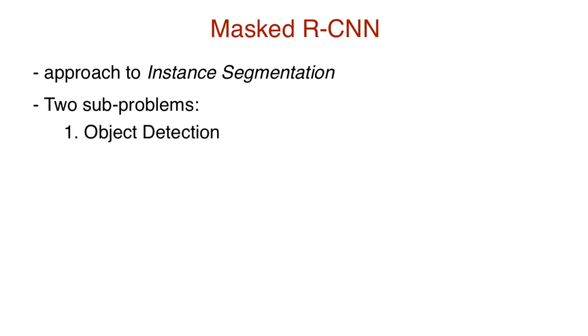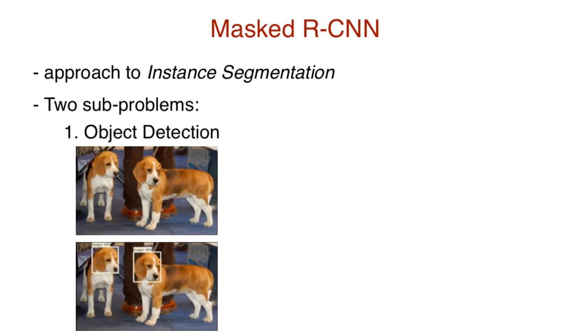The first is object detection, the problem of finding and classifying a variable number of objects in an image. They are variable numbered because the number of objects detected in an image can vary image to image.